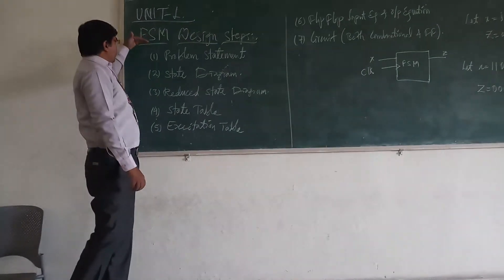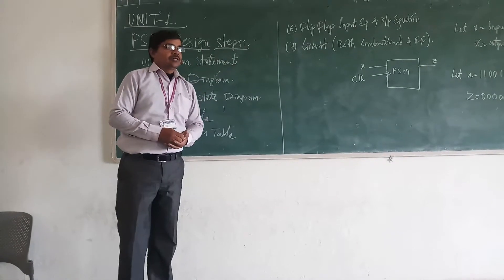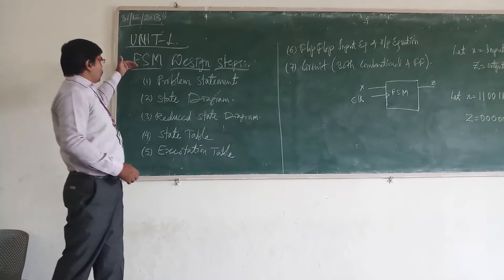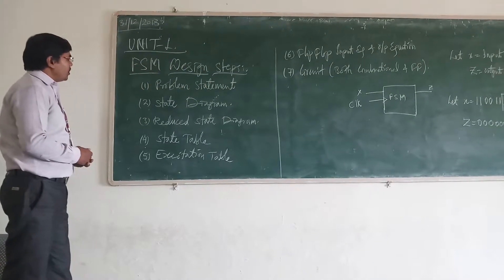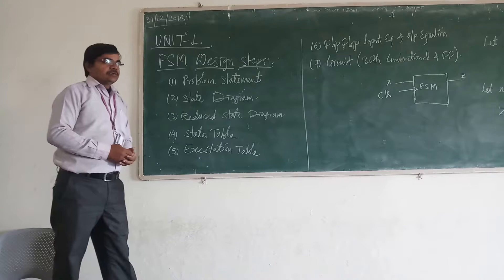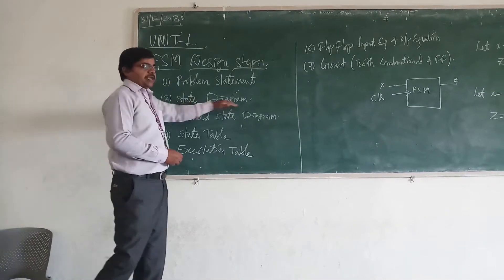The topic is finite state machine design steps. So what are the different steps that we have in case of FSM? First we have the problem statement. From problem statement, we have the state diagram.